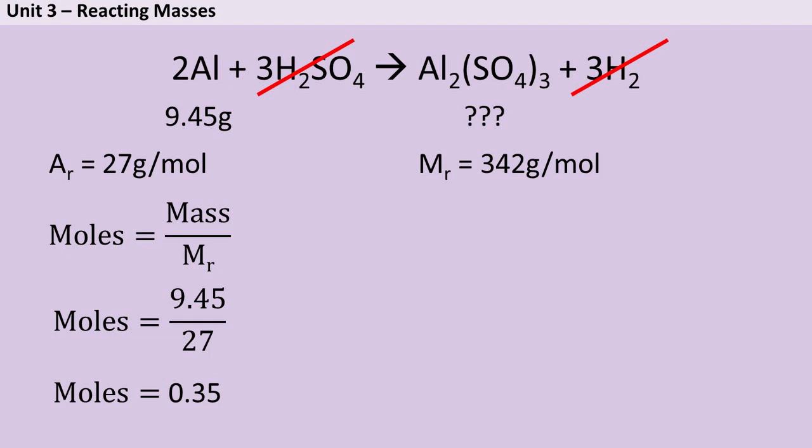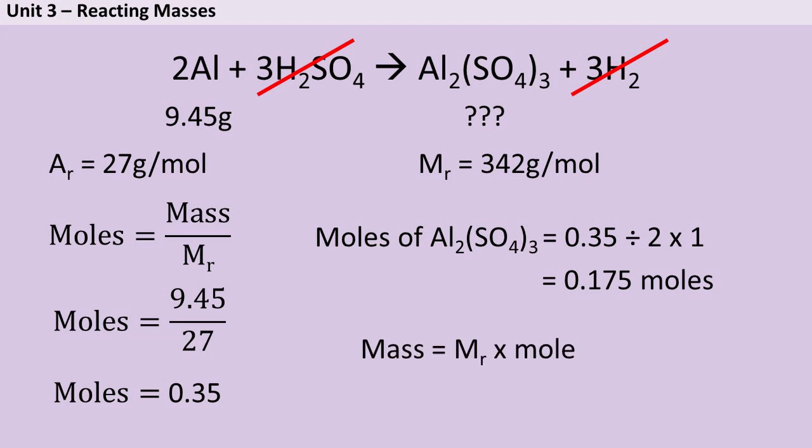Now I need to start looking at my coefficients, those big numbers at the front. So remember, you're dividing by the coefficient of the thing you've got, in this case the aluminium, and multiplying by the coefficient of the thing you're trying to work out. In this case, the aluminium sulfate. So I'm dividing by 2 and multiplying by 1, which gives me a total number of moles of 0.175. Now my last step is to go back to that equation, back to mass is MR × mole, and work out that 342 times by 0.175 moles is 59.85 grams, which is my final answer to the question.